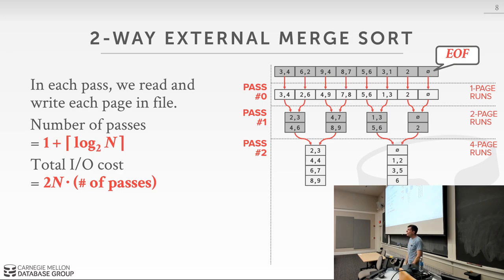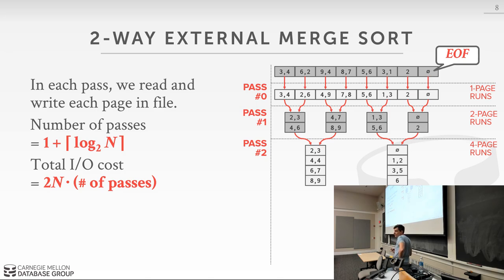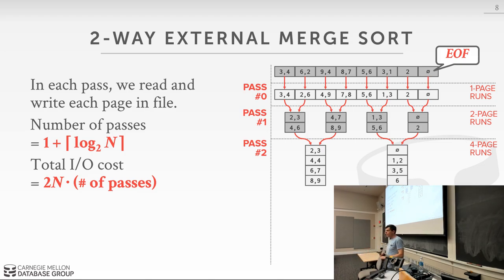Question: where does the 1 come from in the pass formula? Because you always need the first pass — you always have to go through the data once. That's unavoidable. Then each subsequent pass halves the number of sorted runs, which gives you the log term. So one pass is always required just to go through the data the first time.